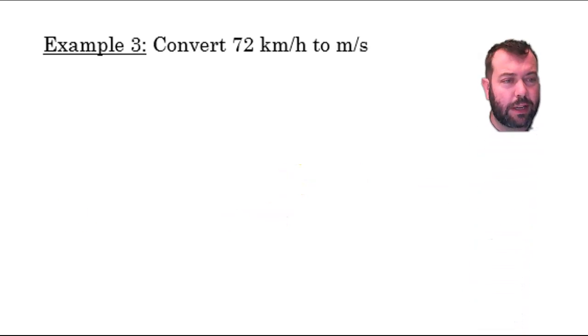Now we've got an example here. Let's see how this one goes. We are looking at some speed here, kilometres per hour, and we want to convert that to metres per second. So 72 kilometres per hour we want to convert to metres per second.